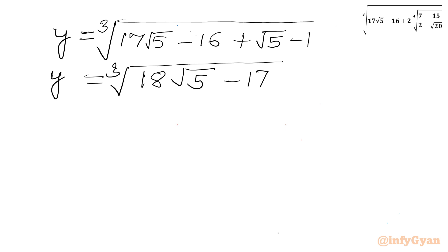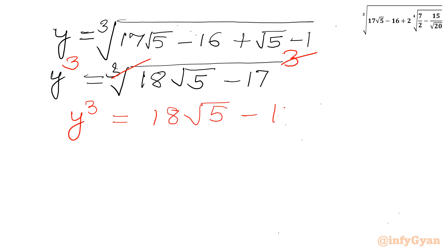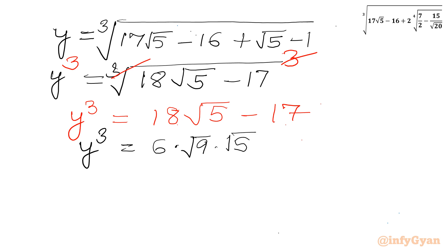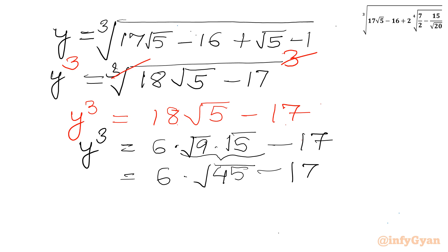Now I will cube both sides. So y³ equals 18√5 minus 17. I can factor 18 as 6 times 3. Writing 3 as √9, we get 6 times √9 times √5, minus 17, which combines the radicals to give y³ equals 6√45 minus 17.